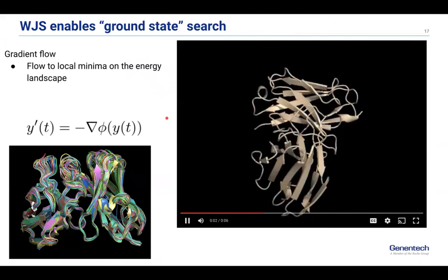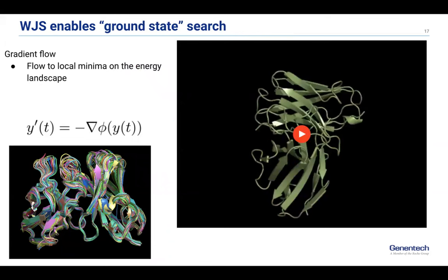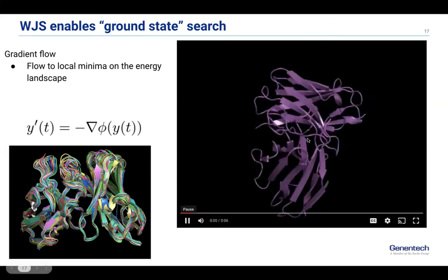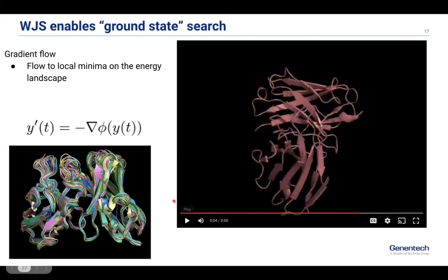You could also do what we call gradient flow, where instead of doing Langevin MCMC, you just follow this learned score function directly to a local minimum in the energy landscape. So if you start at some protein and you want to see — based on everything the model has learned about the training data — what is, in its local neighborhood, the most likely sequence, the most likely protein, you can do that very easily with gradient flow as well.